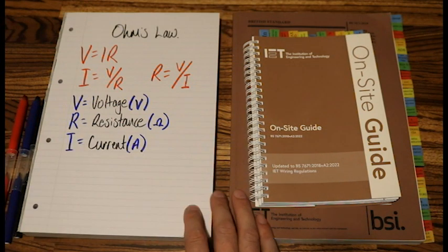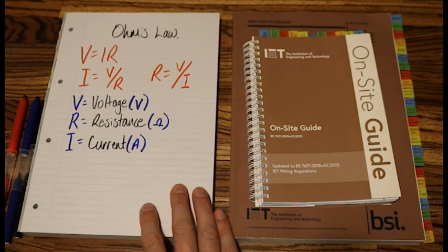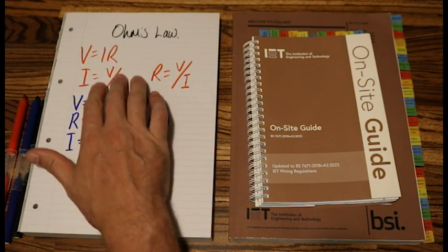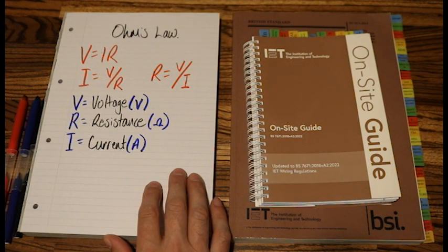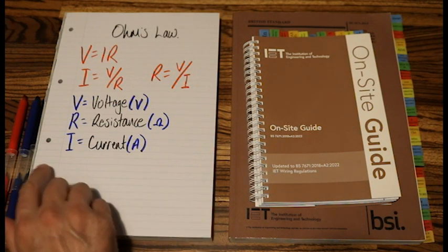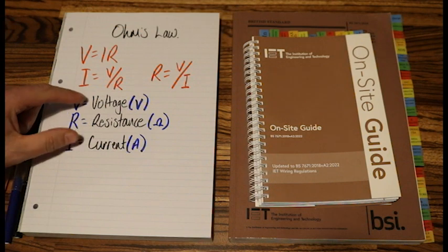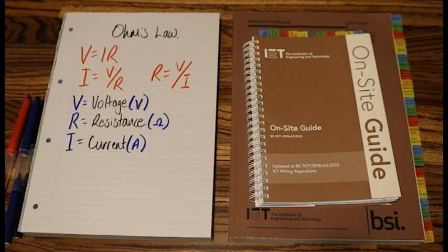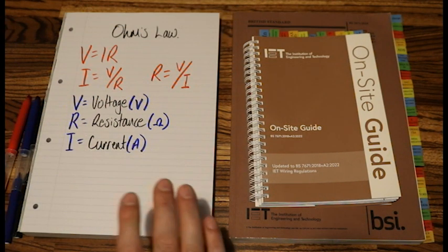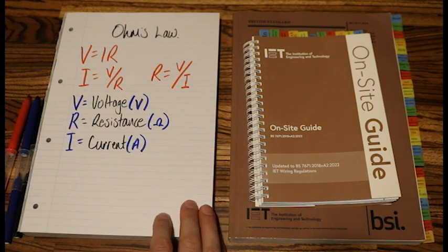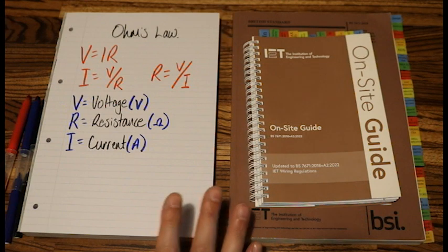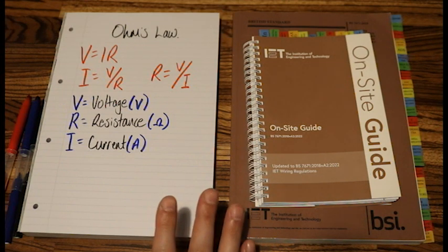Laying out your revision notes like this — having all of the different ways you can transpose the formula, writing down what each letter means, what each letter is called and its SI unit — using the different colours will actually help it stick in your brain better. It's been scientifically proven that if you use different colours it helps it stick in your brain more.